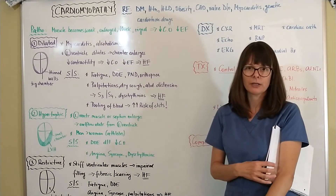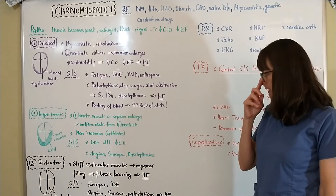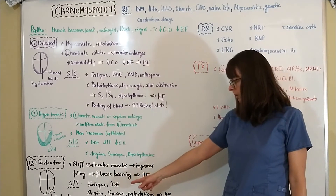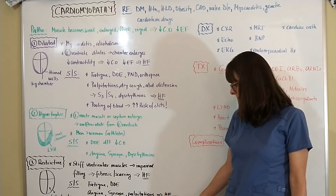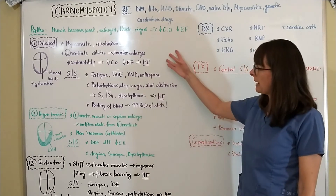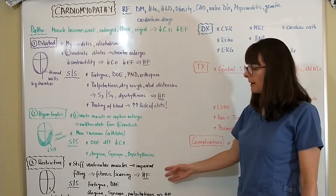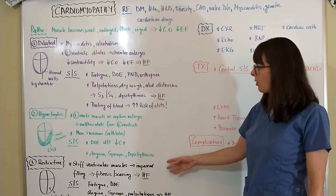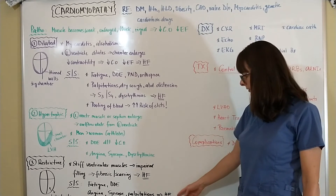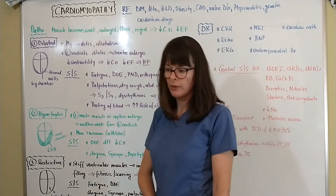Signs and symptoms of restrictive cardiomyopathy include fatigue, dyspnea on exertion, angina, syncope, and palpitations, eventually leading to heart failure. Although the underlying pathophysiology differs among the three types, all three ultimately lead to heart failure, making recognition of heart failure signs and symptoms very important.